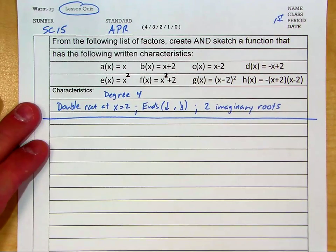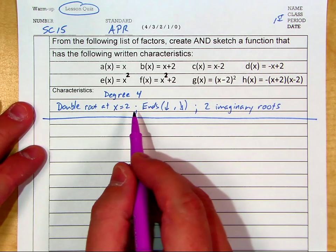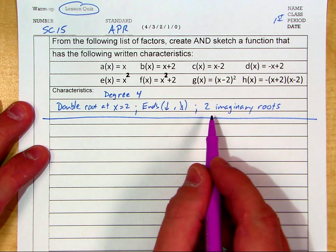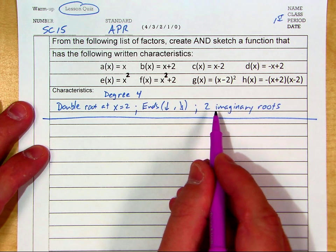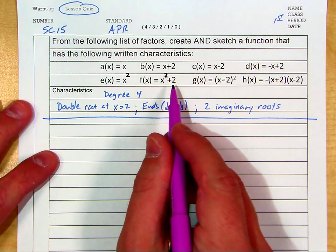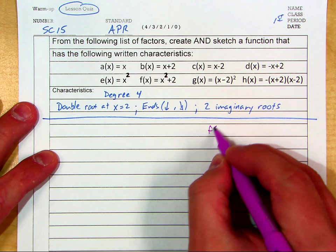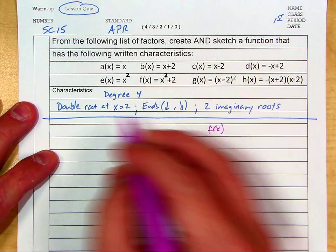So here's the answers to this spot check. We've got some characteristics we need to match here. One of the ones I see is two imaginary roots. I know f(x) has two imaginary roots, so I'm going to use f(x) in my function, x squared plus 2.